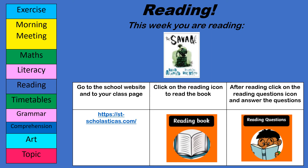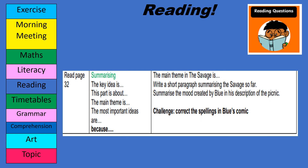To find out what you are reading this week, go to the school website and click on the reading book icon — it will tell you what pages you need to read. After that, click on the reading questions icon and answer the questions. Today you are reading page 32 and your strategy is summarising. Make sure that you use the stems below, then move on and answer the questions, and of course complete the challenge.